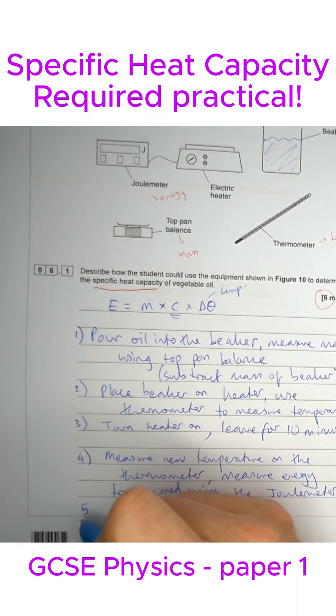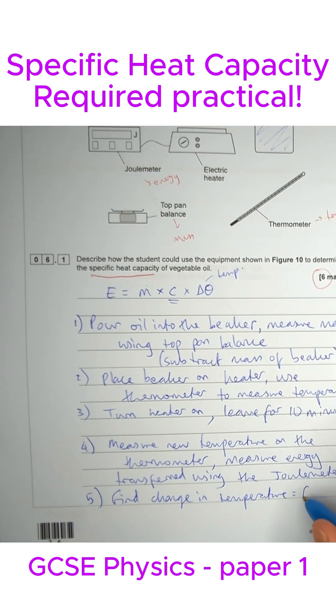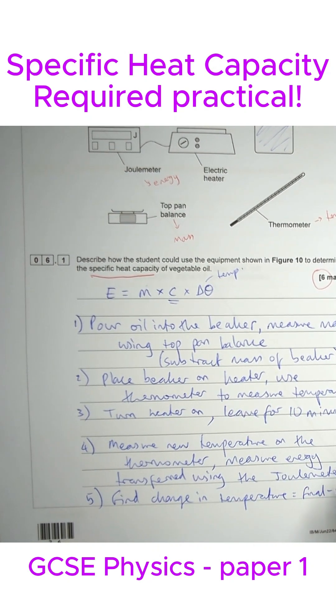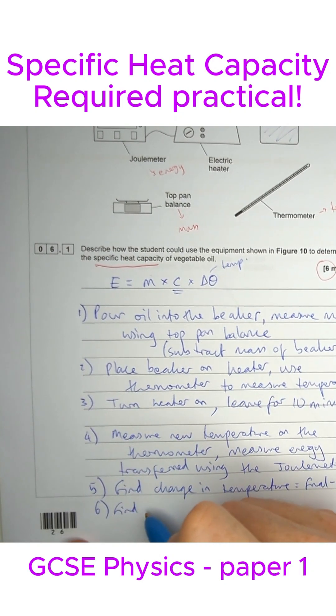What we're then going to do is subtract to find the change in temperature, which equals the final minus the initial readings. Then find the specific heat capacity.